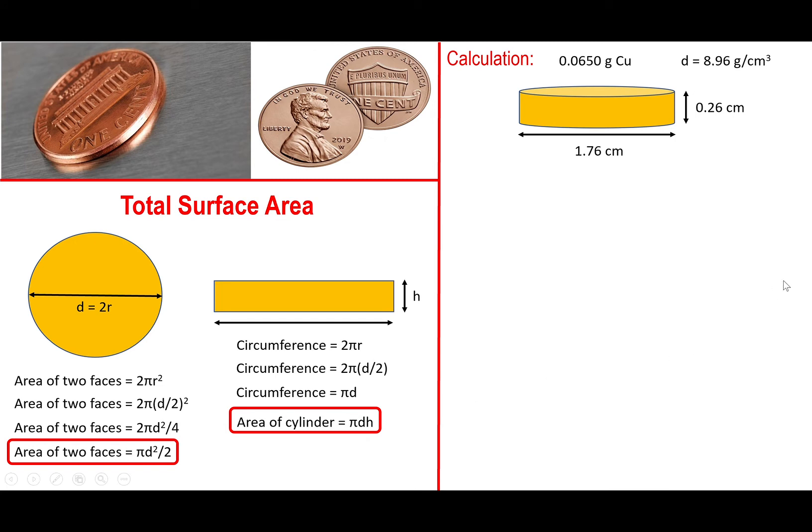Now, to give you a more concrete example, these are the equations we're going to use for calculating the total surface area of the penny. Right here, I'm giving you a hypothetical picture of the penny, for which we've measured a diameter of 1.76 cm and a height of 0.26 cm. Also, I am providing you with the mass of copper, which is found experimentally using the spectrometer. This is something you will have to calculate based on the absorbance data that you have in the lab. But for now, I just completely bypass all of it and just went straight to the result, which is the 0.065 grams of copper. We also know that the density of copper is 8.96 g/cm³.